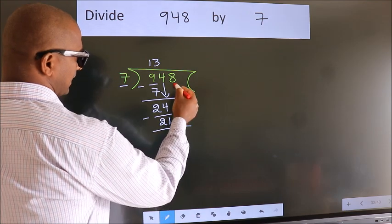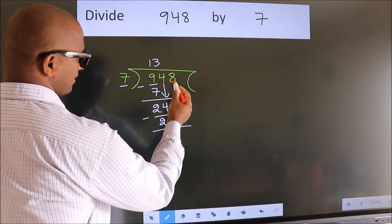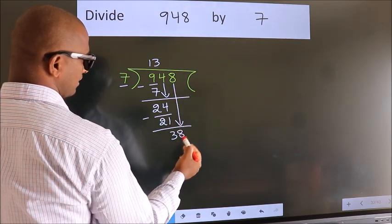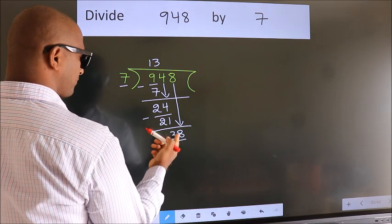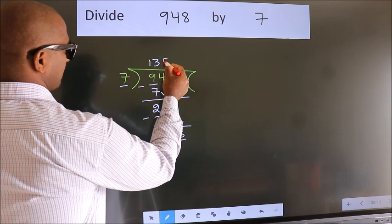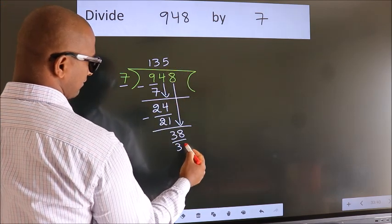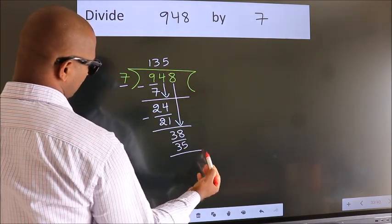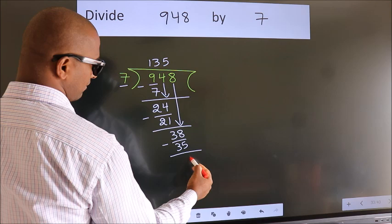After this, bring down the beside number. So, 8 down. So, 38. A number close to 38 in 7 table is 7 fives, 35. Now, we subtract. We get 3.